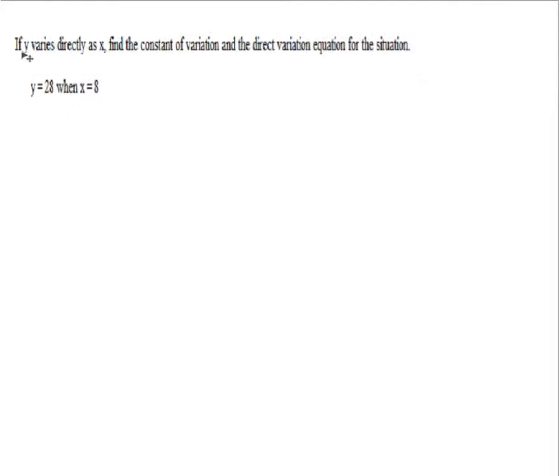We've got the question, if y varies directly as x. This is a key word that you're going to come across in your work. Varies directly. When you see those words varies directly, you know that the equation that you're shooting for is y equals k times x. So this particular problem asks us to find the constant of variation. That means we have to find what k is. And once we find k, then we have to find the direct variation equation. But the first step is to find the k. And the situation is, y is 28 when x is 8.